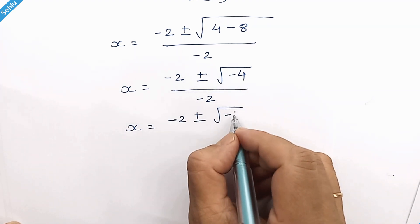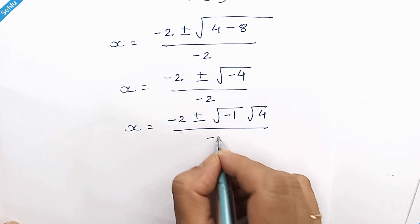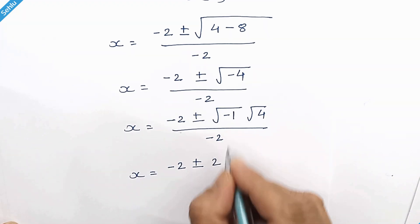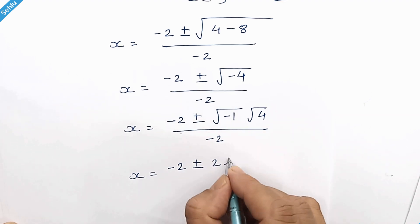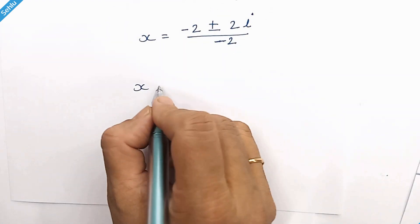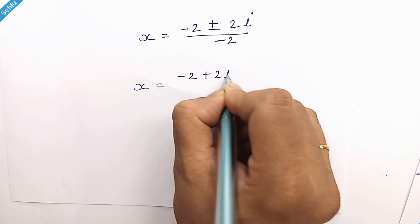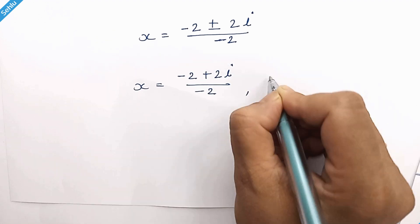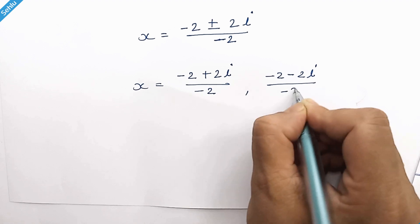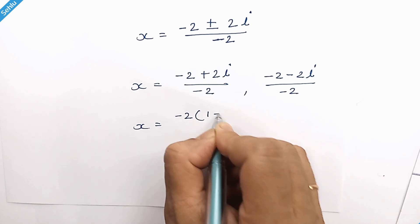The square root of negative 4 can be written as square root of negative 1 times square root of 4, over negative 2. Square root of 4 is 2 and square root of negative 1 is iota. So x equals (negative 2 plus 2 iota) over negative 2 and (negative 2 minus 2 iota) over negative 2. We can factor out negative 2, giving (1 minus iota) over negative 2.